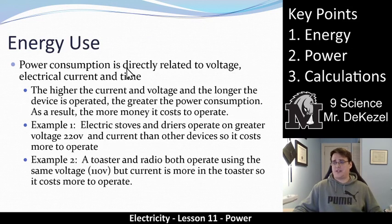Power consumption is also directly related to voltage, the current, and the amount of time that that device is on. Obviously more power will be consumed if the light is on for longer. So the higher the current and the voltage and the longer the device is operated, the greater the power consumption. As a result, it would cost more money. So as an example, electric stoves and dryers operate on greater voltage, 220 volts, and current than other devices, so they cost more to operate. Increase voltage, increase current, increase costs, increase power.